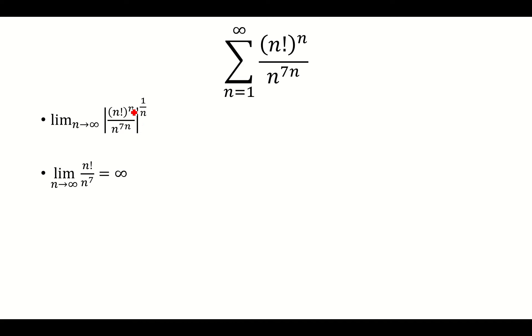So that's going to distribute, and then the n's are going to cancel. We have n factorial over n to the 7th, and we know that n factorial is much greater than n to the 7th power.